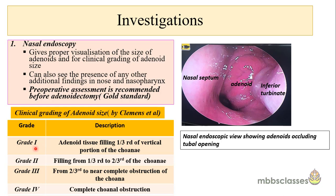The grading system by Clemens et al. is an approximate clinical grading done during nasal endoscopy. Grade 1: adenoid fills one-third of the vertical portion of the choana. Grade 2: fills one-third to two-thirds of the choana. Grade 3: fills two-thirds to near complete obstruction of the choana. Grade 4: complete choana obstruction.